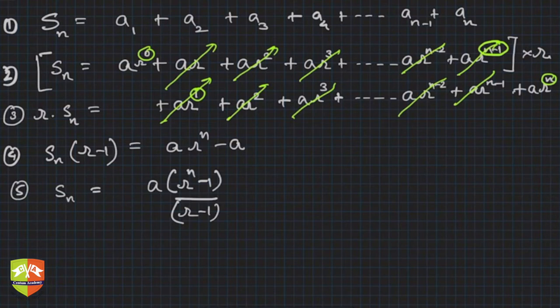So we just got sum of n terms of a GP. Correct?